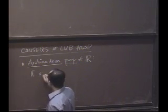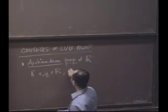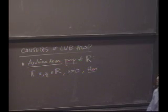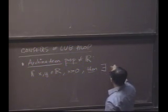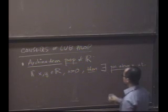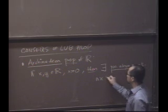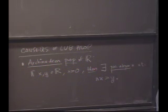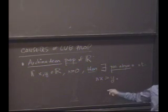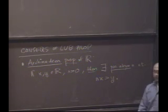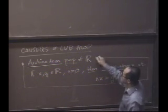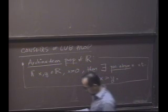So let's discuss some consequences of the least upper bound property. One of the consequences is something called the Archimedean property of the real numbers. What it says is the following: if you give me two real numbers, and one of them x is bigger than zero, then there is a positive integer n such that n times x will eventually be bigger than y. If y is negative, n equals one will suffice. This seems like a very innocent property, but it's a consequence of the least upper bound property.